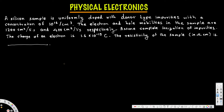Let's look at this problem. A silicon sample is uniformly doped with donor type impurities with a concentration of 10 to the power of 16 per centimeter cube. The electron and hole mobilities in the sample are 1200 centimeter square per volt second and 400 centimeter square per volt second respectively. Assume complete ionization of impurities; the charge of an electron is 1.6 times 10 to the minus 19 coulomb. The resistivity of the sample in ohm centimeter is what?